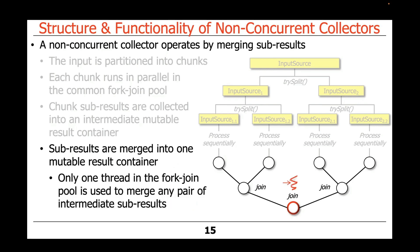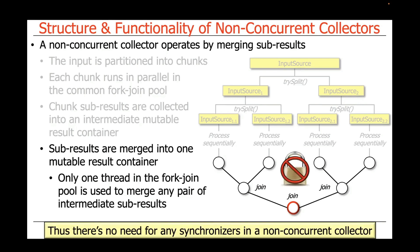Only one thread in the fork-join pool merges any pair of these intermediate subresults. So as programmers, we don't need to put any locks in our code when we use a non-concurrent collector, which is very nice.